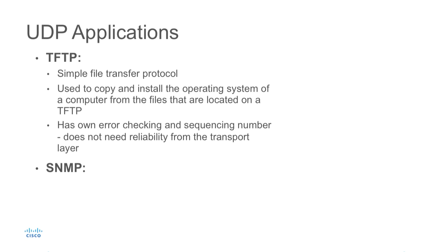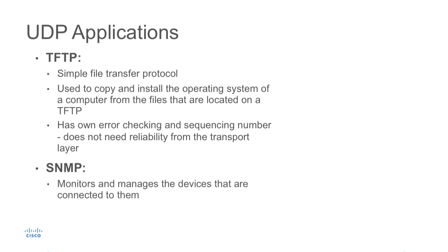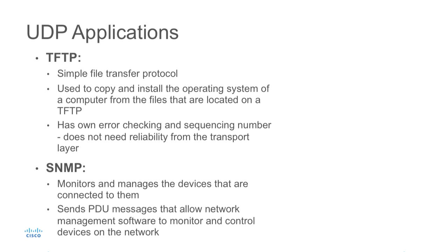Another application that uses UDP is SNMP, the Simple Network Management Protocol. This protocol is used to monitor and manage network devices by sending protocol data units, or PDUs, to let us monitor and control those devices. UDP is a perfect fit for this because SNMP handles its own error checking and sequencing.